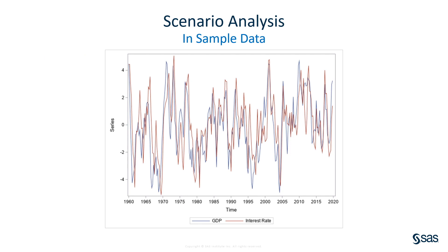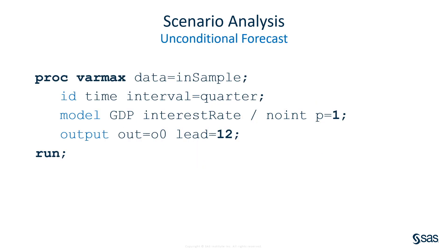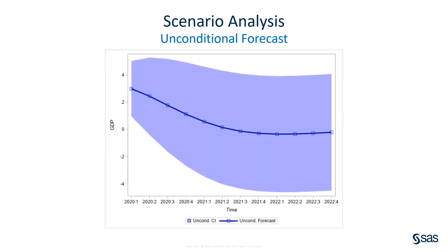Here is a plot of two simulated time series showing 60 years of quarterly data. For convenience, we use GDP and interest rate to name the series. Assume that you are interested only in the GDP forecast for the next three years. First, let's produce the unconditional forecast. Here is the plot of the unconditional forecast — the point forecast and its 95% confidence interval.